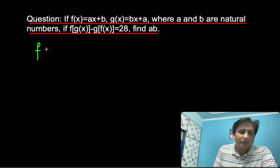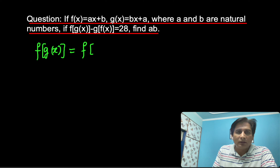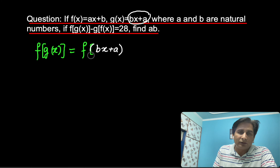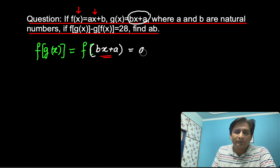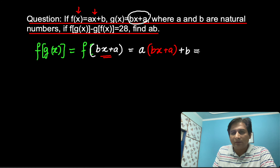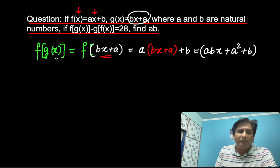First, let us find f(g(x)). f is as it is, and g is given in the question as Bx plus A. So put Bx plus A in place of x in f. f(Bx + A) means replacing x with Bx plus A on the right side: A times (Bx plus A) plus B, which gives ABx plus A squared plus B.